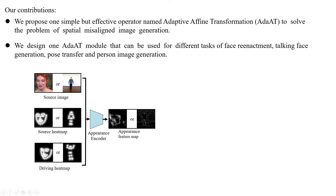Firstly, three input images — including one source image, one source heat map, and one driving heat map — are input into one appearance encoder to extract appearance feature maps.